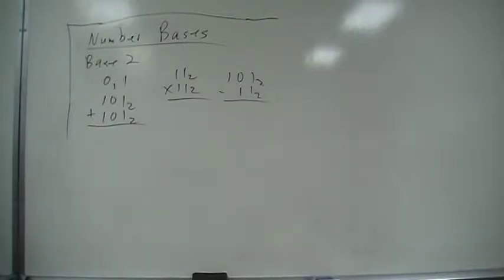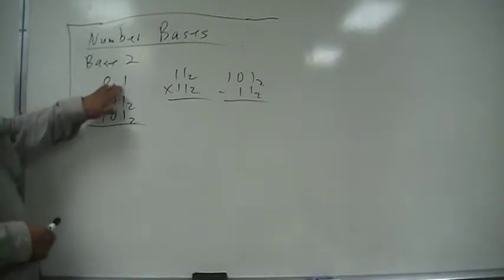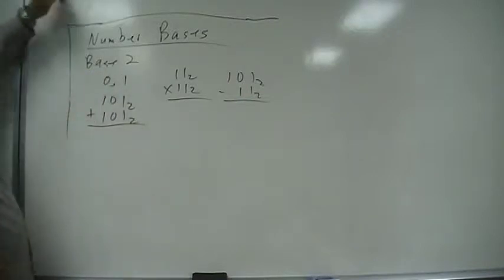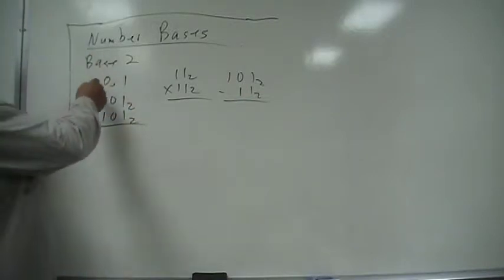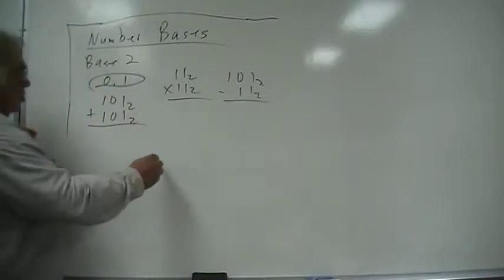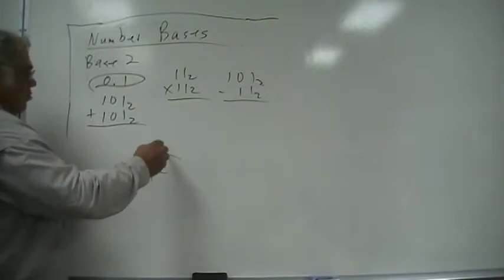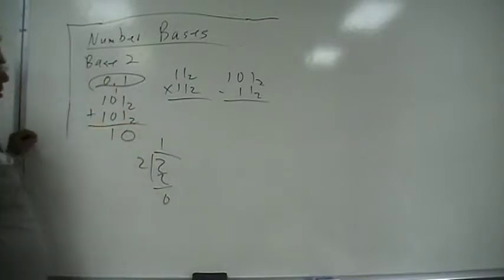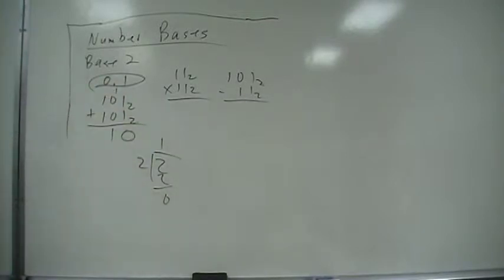On this one, there is an easy way to add in these different bases. Maybe it's a little different from what you're used to, but one plus one is two. Well, we only have these digits, so you can't have a two, so what you do is you divide that two by two and you use the remainder, and this one here goes over here for a carry.